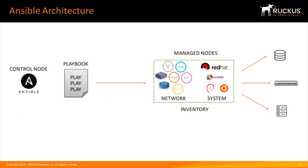Let's talk about the Ansible architecture. There are four key components. The first one is the control node — the Ansible control node is the central point of management for the managed nodes, and it can be an Ubuntu machine, CentOS, or even a Windows machine. Configuration is essentially pushed to the managed nodes from the control node.